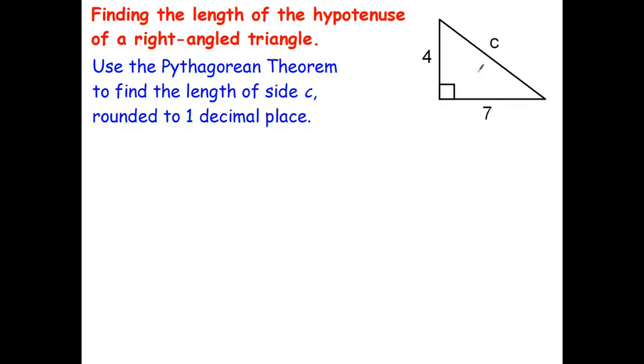The first thing I always do whenever I'm working with the Pythagorean theorem is I label the three sides of the triangle a, b, and c. Now this one's already correctly labeled, but usually it's not. So I'll put another c there. The hypotenuse is always labeled as c. Either of those sides could be a and b. I just by default make a the smaller side and b the larger side of the two legs, but I don't have to. It could be the other way around.